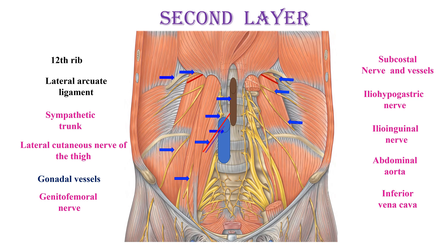On the right side, you can see the psoas major cut on two edges to show the lumbar plexus, which is embedded in the substance of that muscle and is considered a content of the psoas major. That is the lumbar plexus.